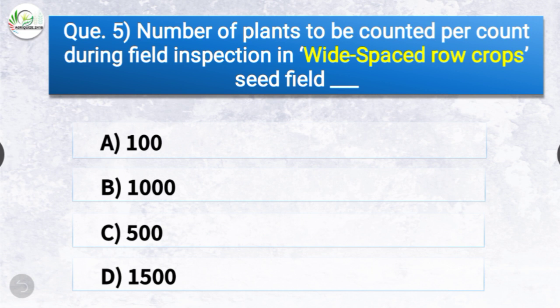Question number five: Number of plants to be counted per count during field inspection in wide-spaced row crop seed field — the options are 100, 1000, 500, or 1500. The correct answer is option A — 100. The number of plants to be counted per count during field inspection in wide-spaced row crop seed field is 100.